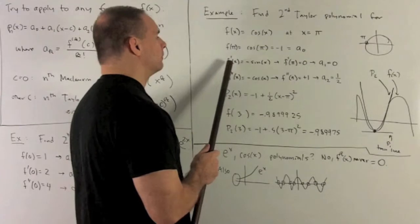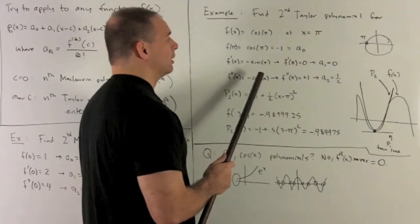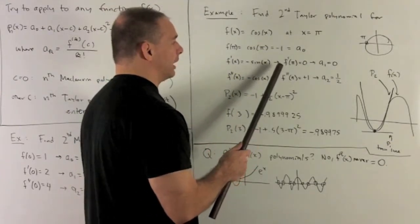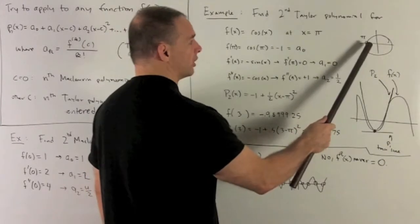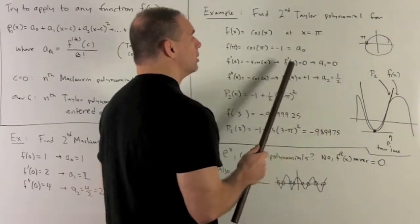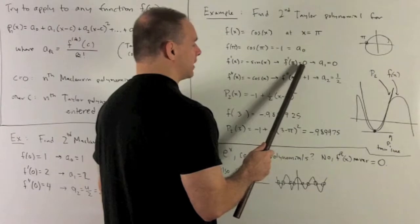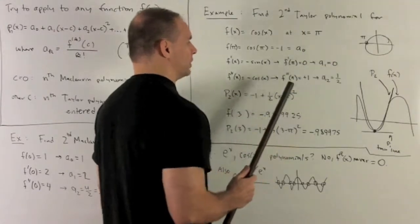Take the first derivative, it gives me minus sine x. Put π into there, that's going to give me the y value, which is going to be sine at π, is going to be 0. So this is going to be equal to 0, and then that's going to say that our a₁ is equal to 0.